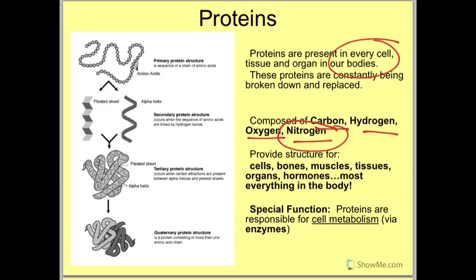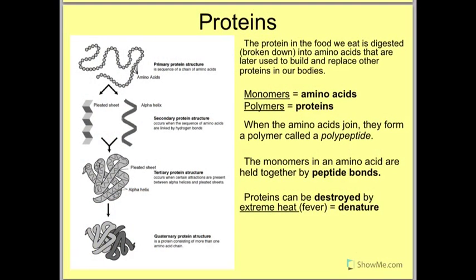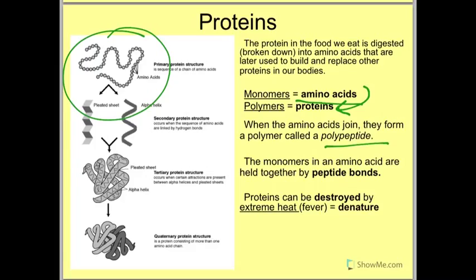Proteins provide structure for cells, bones, muscles, tissues, organs, and hormones. Most everything in the body does what it does because of proteins. There are also special proteins called enzymes that help with cell metabolism — how we get our energy. The protein in the food we eat is digested into amino acids that are later used to build and replace other proteins in our bodies. A protein is made of a long chain of amino acids — that's the monomer. When you put a lot of amino acids together, you get your protein. When amino acids join, they form a polymer called a polypeptide, held together by peptide bonds.